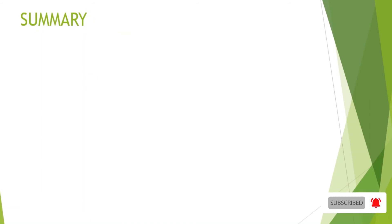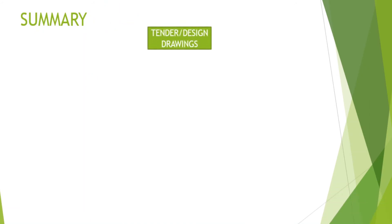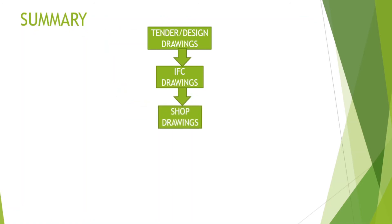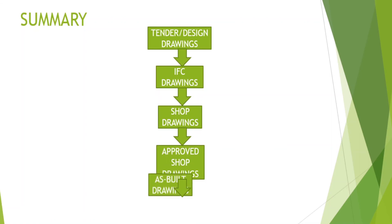Now let's summarize what we have gone through. The tender or design drawings is an official document in the tendering stage. This gets evolved into IFC drawings in the contract award stage and becomes an official document. These drawings get evolved into shop drawings in the execution stage. The shop drawings get approved and become an official document in the execution stage. Finally, the drawings evolve into As-Built drawings after work completion and become an official document in the handing over stage.